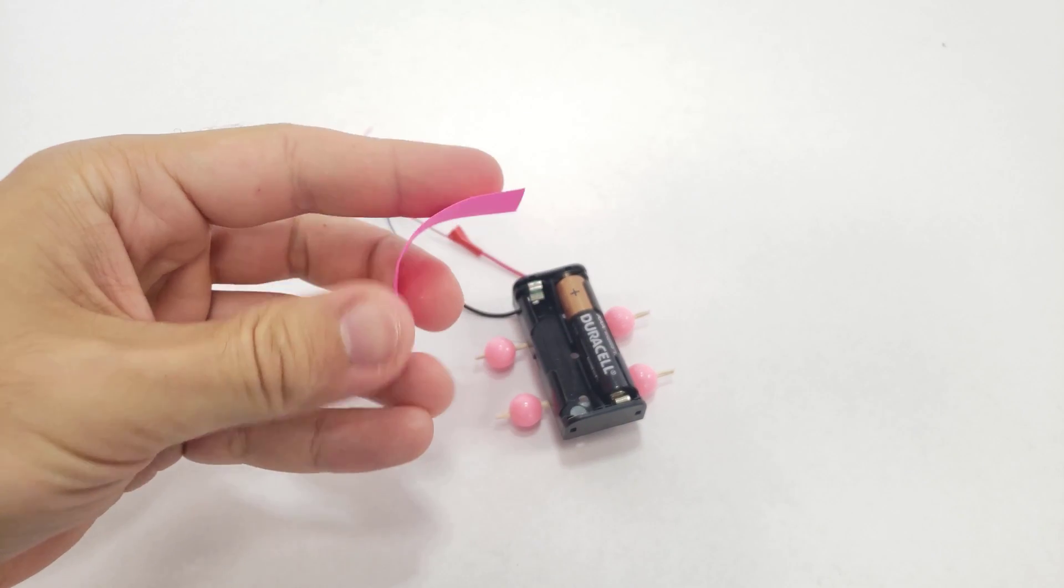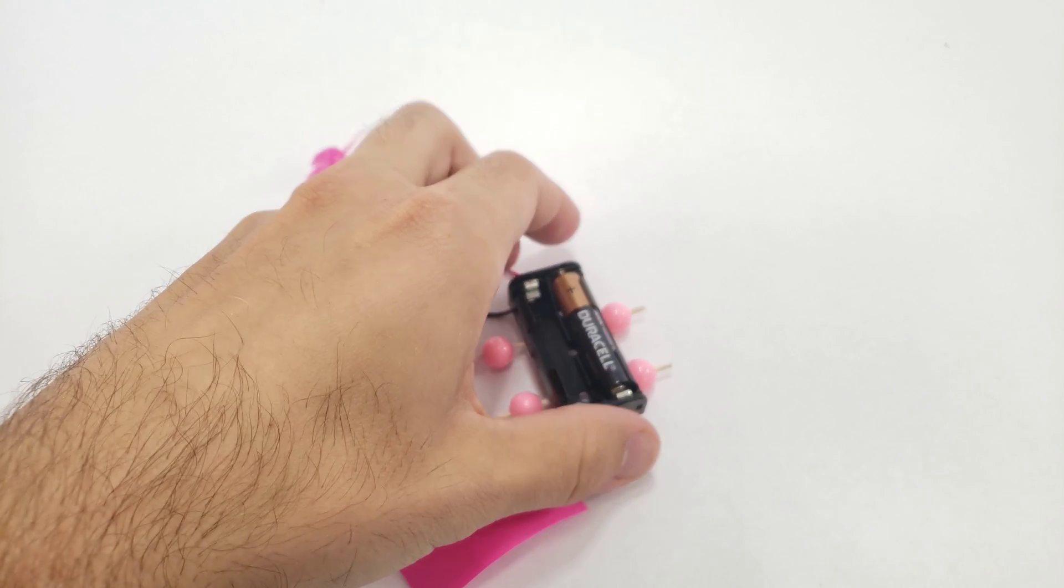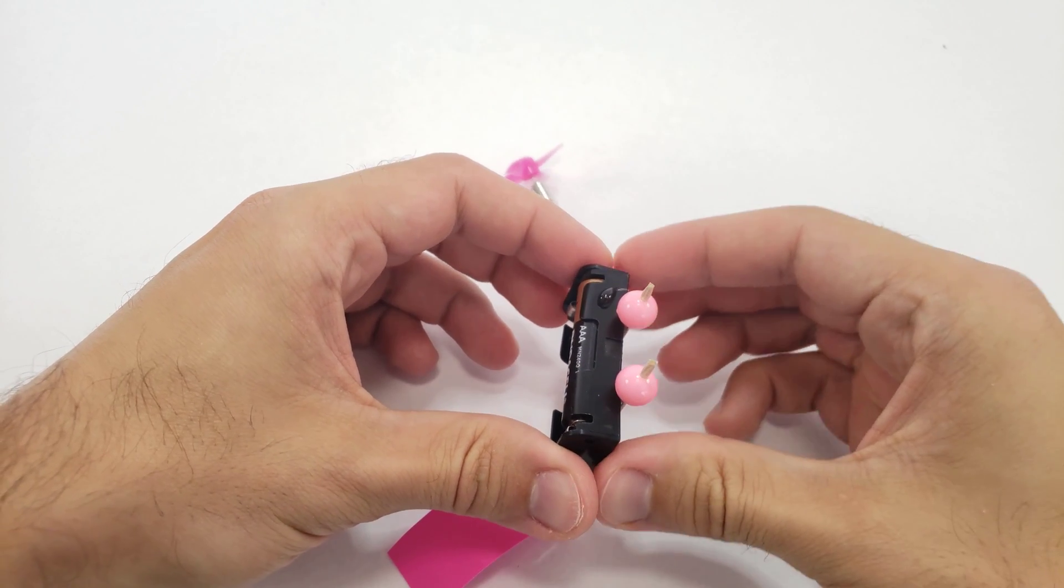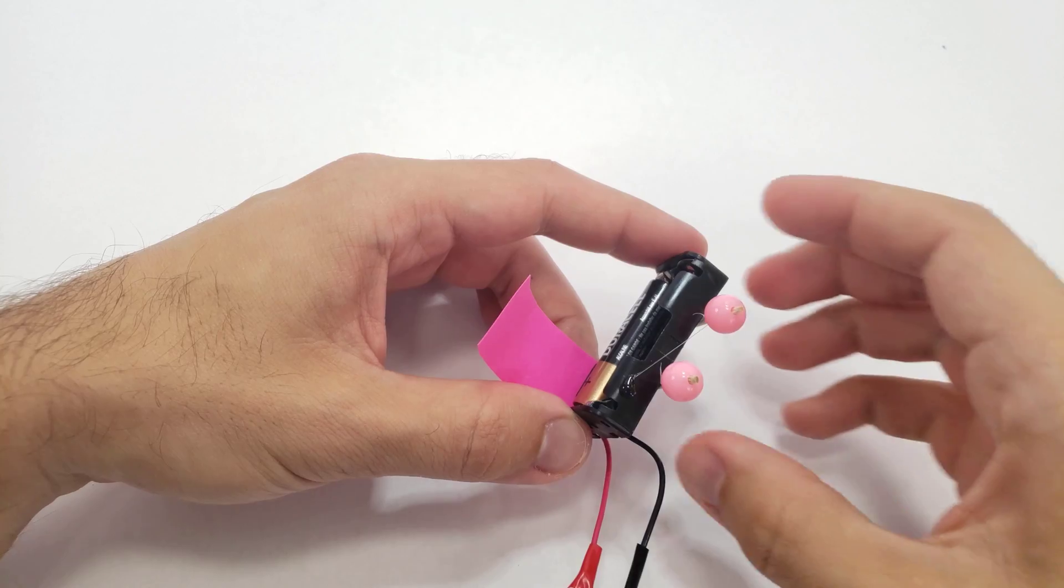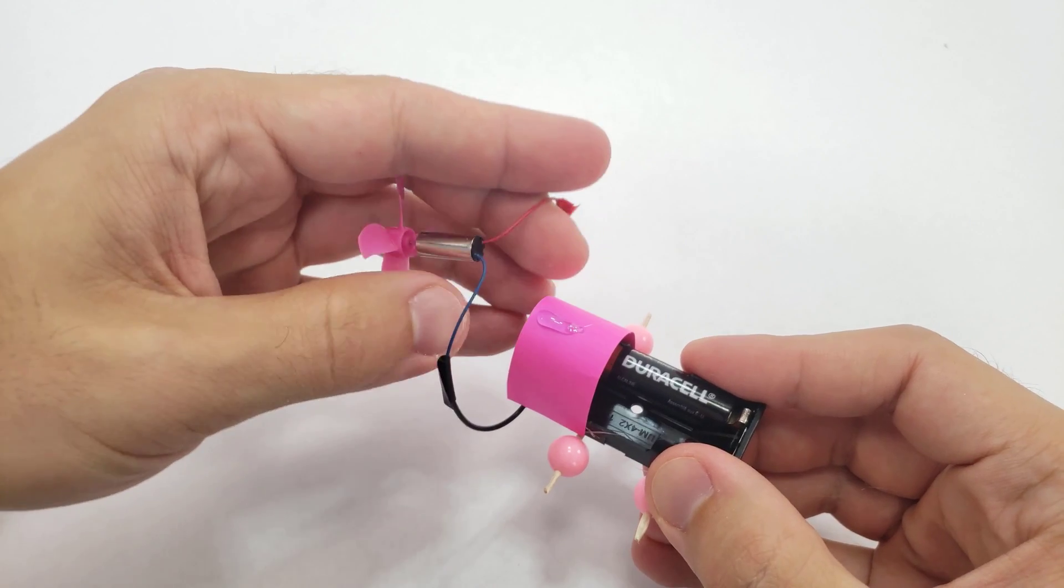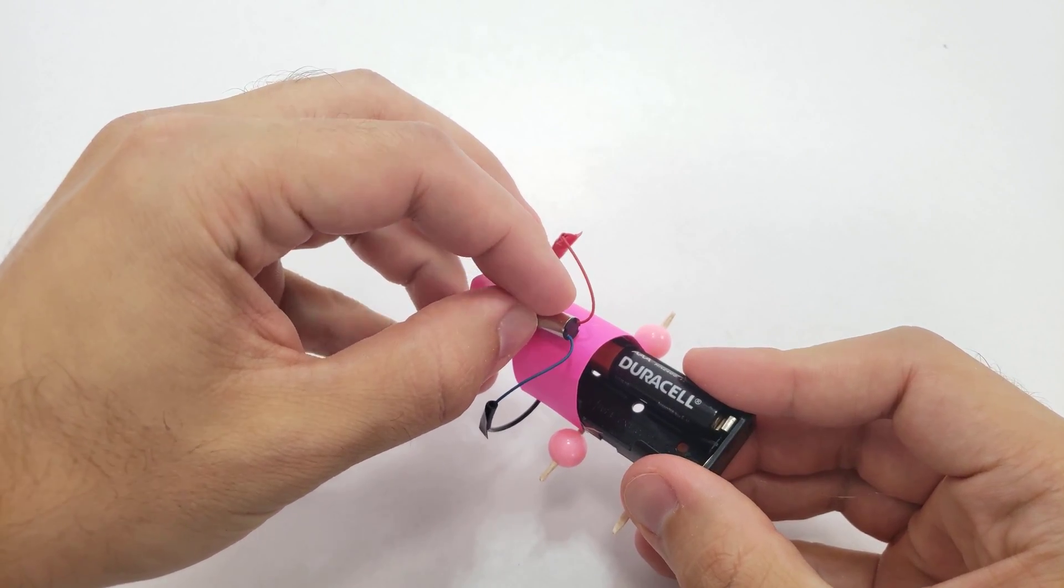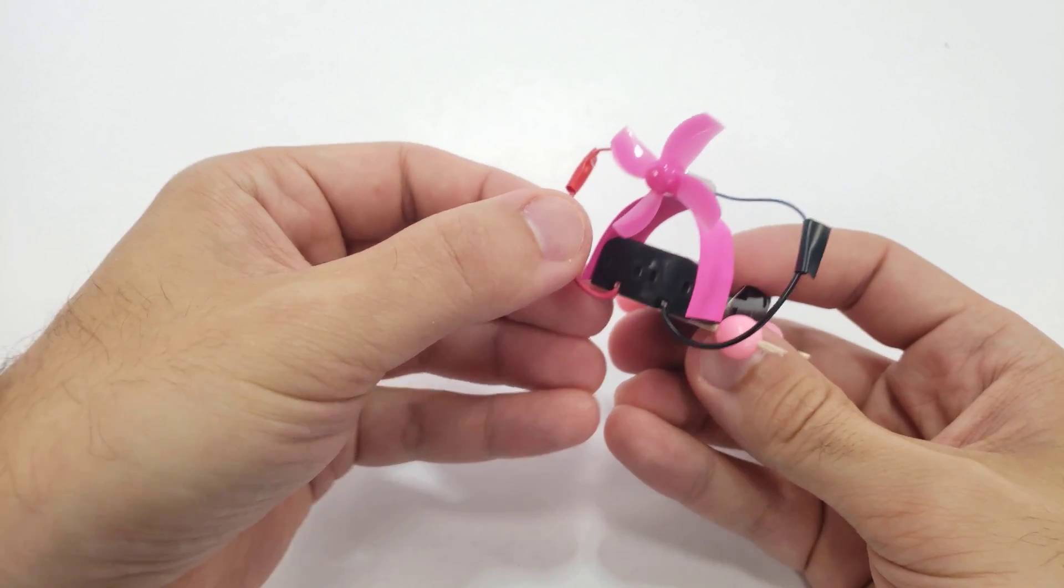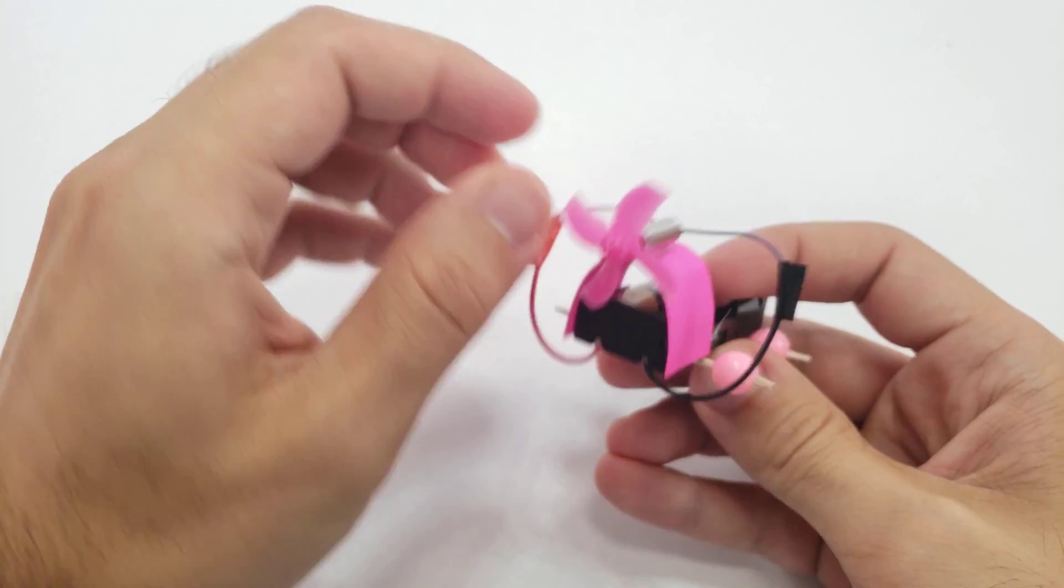Cut a small strip of card stock and bend it slightly so it's curved. Use hot glue to attach it to each side of the battery pack, forming an arch that will support the motor. Then glue the motor to the top with the propeller facing backwards. Bend the wires out of the way so they won't get caught by the spinning propeller.